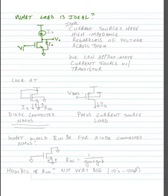Assuming that our transistor has some output resistance, the current source load is ideal because current sources have high impedance regardless of the voltage across them. We're talking about ideal current sources, and we can approximate a current source with a transistor.